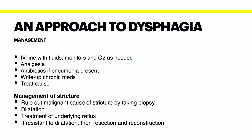How do we manage a patient with dysphagia? First, your basics: set up an IV line with fluids, as the patient might be dehydrated from vomiting, and attach monitoring and O2 as needed. Give the patient analgesia if required, as well as antibiotics if you suspect that a pneumonia is present. Don't forget to write up your patient's chronic medications and then treat the cause of the dysphagia.